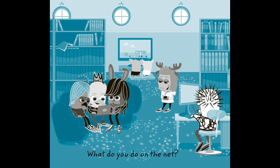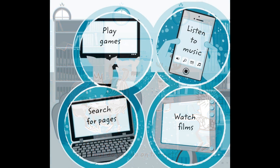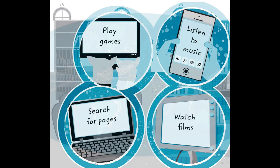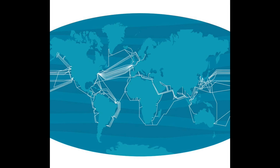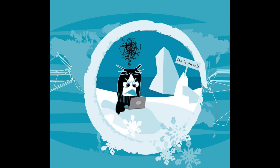Where is the internet? You have the internet, for example, in your computer, mobile, and your tablet. You can play games, listen to music, search for pages, and watch films. But really, the internet is the world's largest network of computers, and exists all over the planet, except in some remote places.